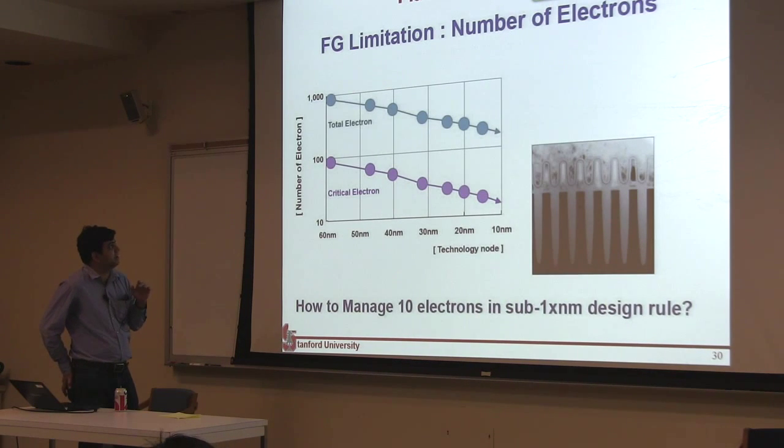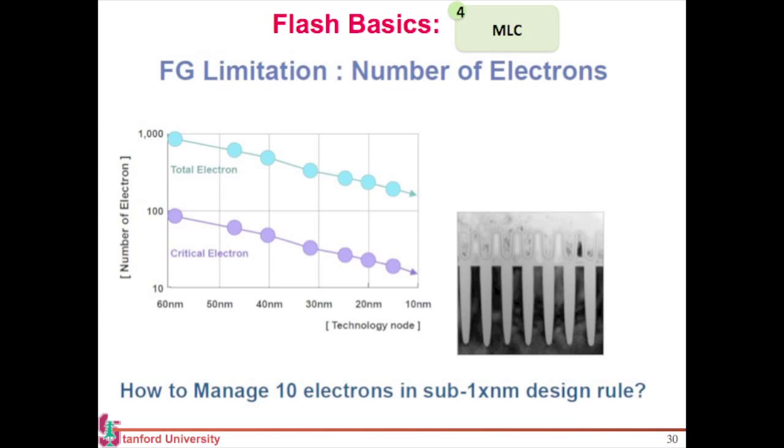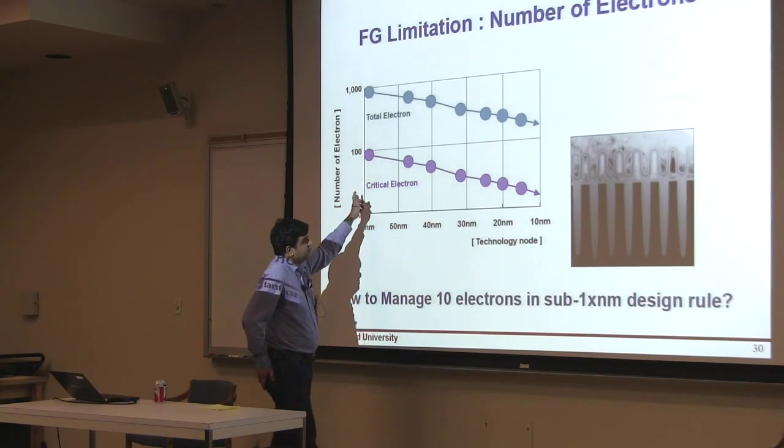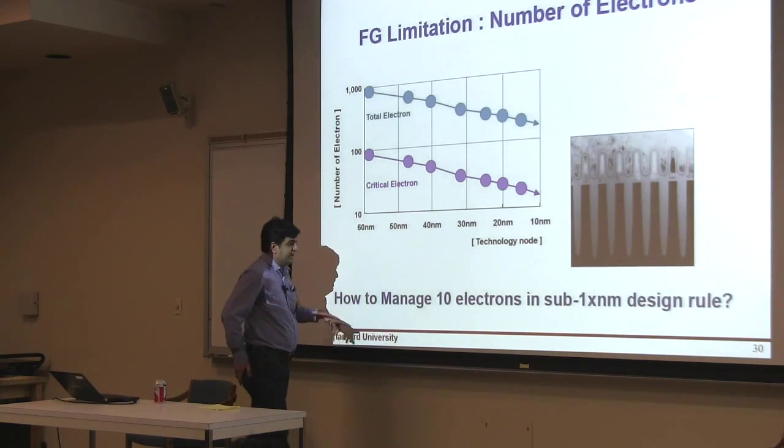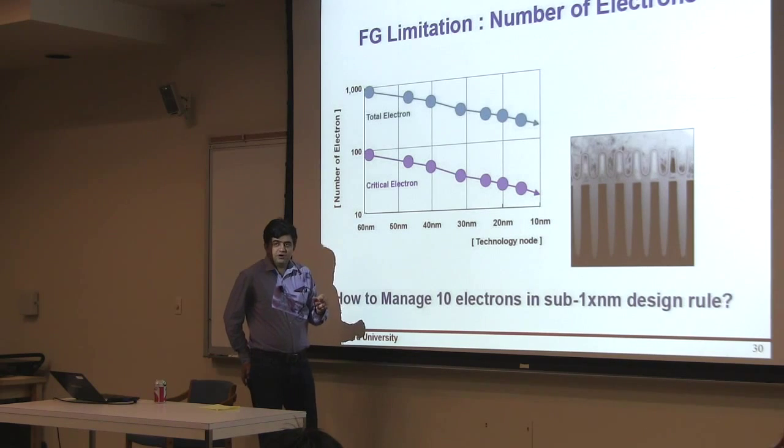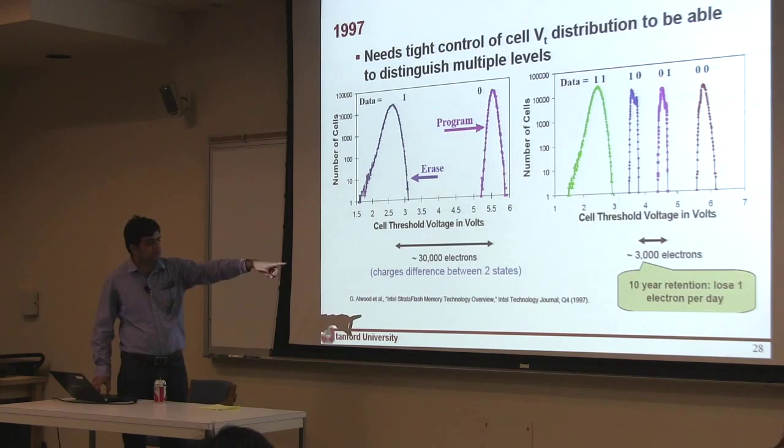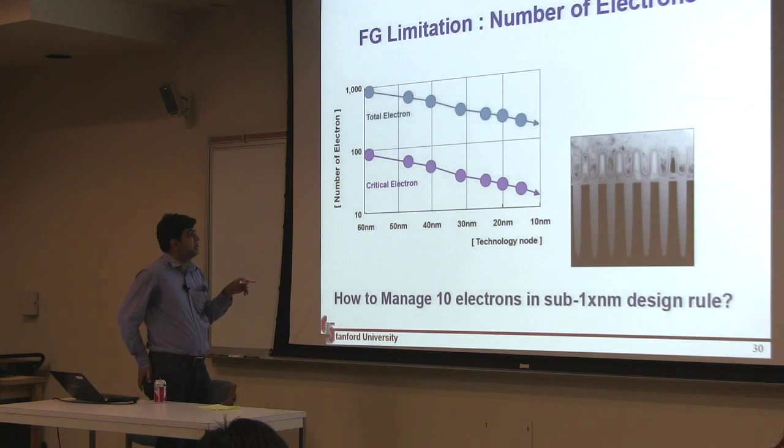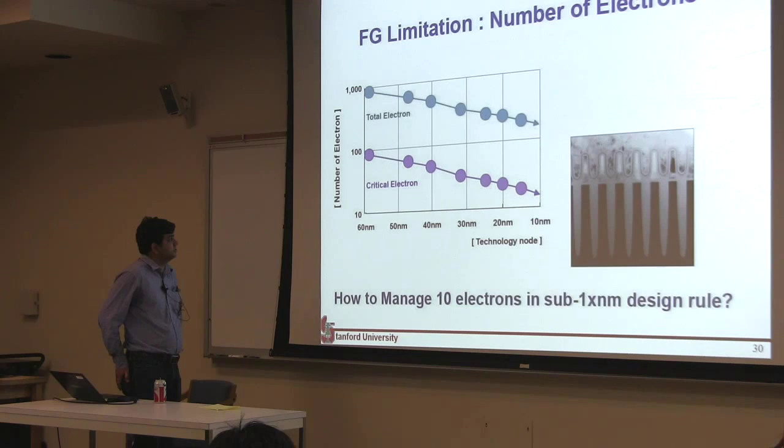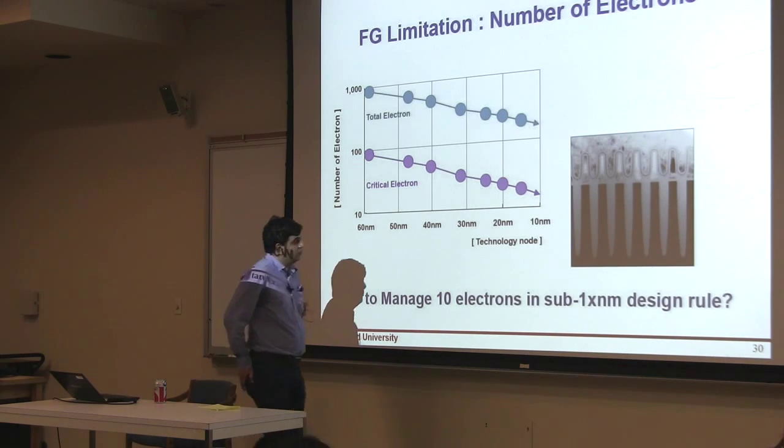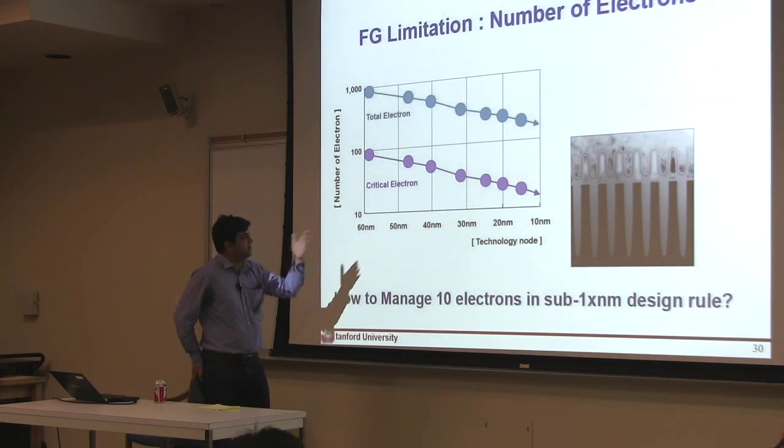But look at what's happening in the current technology. This is the total number of electrons that you store between your program and erase state as a function of different technology nodes. So at 20 nanometer node, you only have around 500 electrons in total between your lowest threshold voltage state and your highest threshold voltage state. And if you want to store 10 levels or 16 levels into it, what you get is essentially 10 electrons for each of these states. And if you want to retain them for 10 years, that means you want to lose one electron over a year. So it has gone from losing one electron per day to losing one electron per year. But still, I find it hard to believe, but actually people are able to do that. But this is important that for a 20 nanometer cell, you only store around 500 electrons. And per state, you only have 10 electrons.